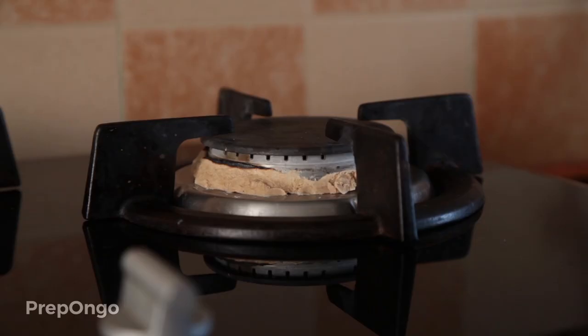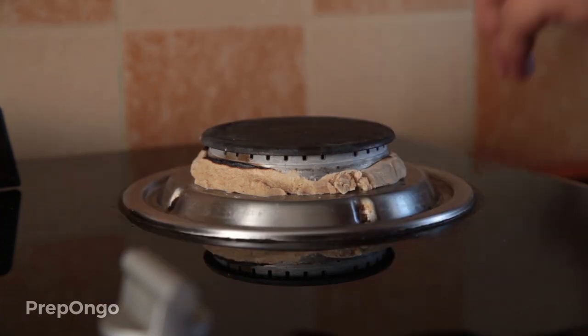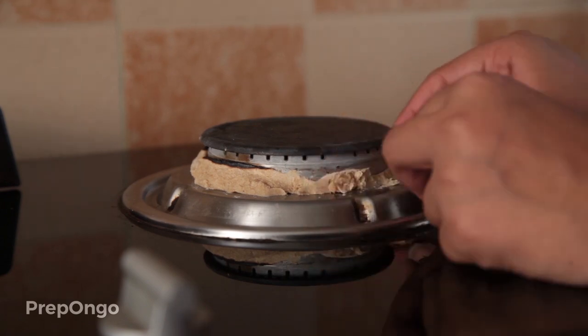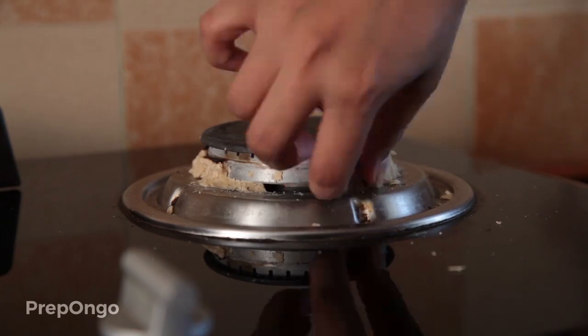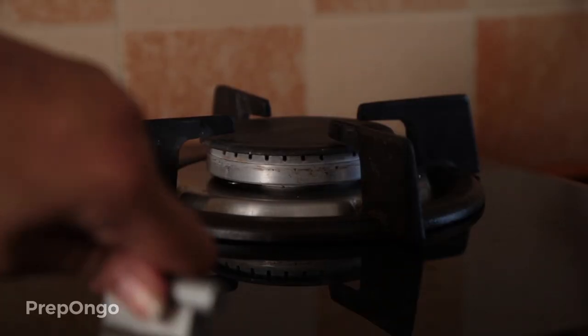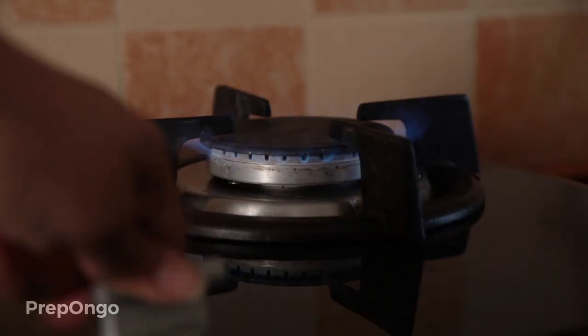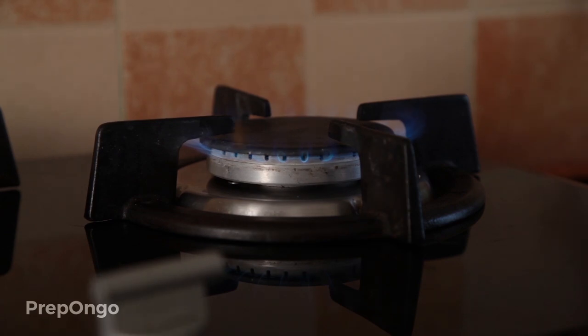I had covered this inlet of air with the help of a needle door to stop the supply of air. Now I will remove this covering. Once the covering is properly removed, we can see that the previous yellow flame has converted to a blue flame due to complete combustion.